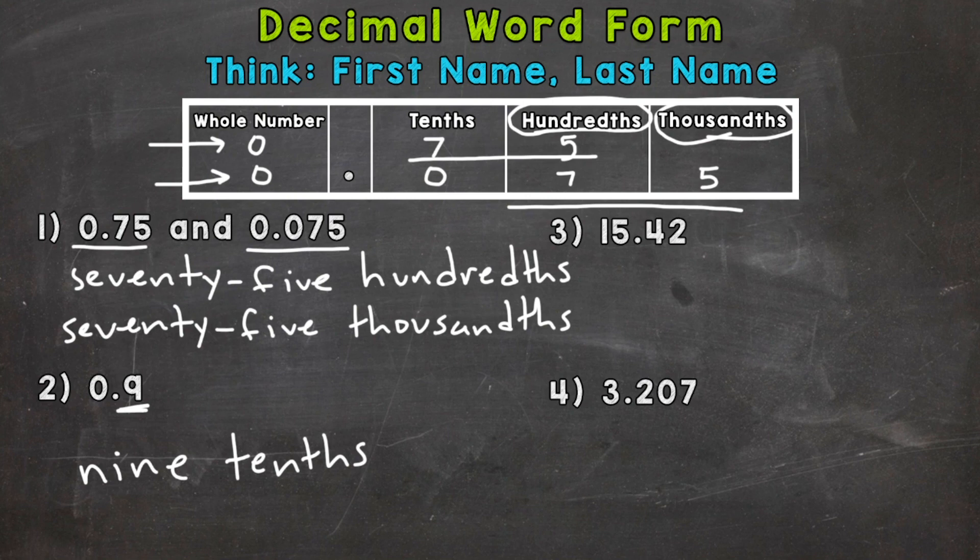Now, number three and four, we have whole numbers. So there's going to be a very important word that represents that decimal within our word form. So read the whole number as is. We have a 15. That's what we're going to start with. I'm actually going to section this off. So we'll start with 15.